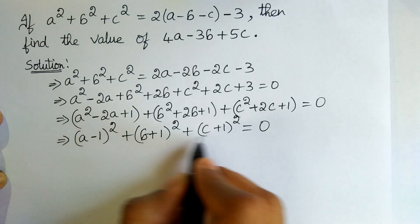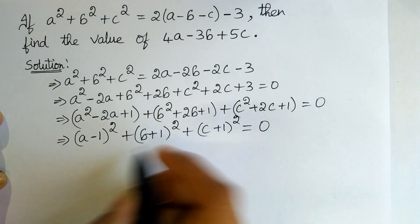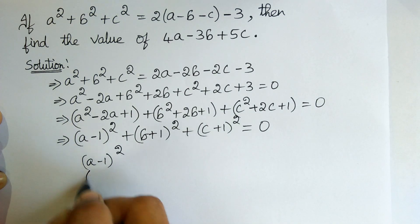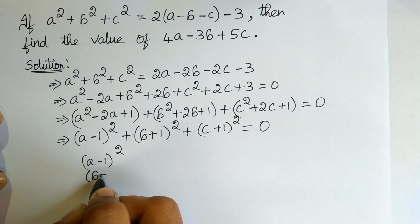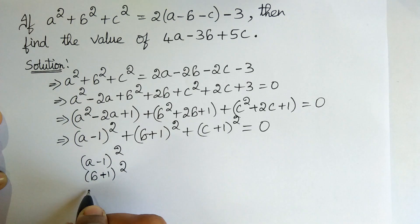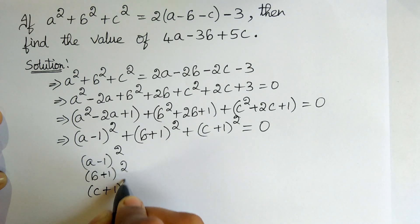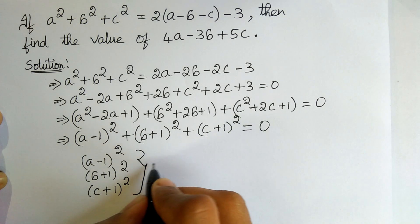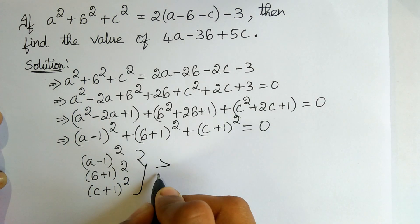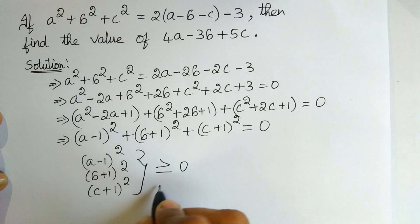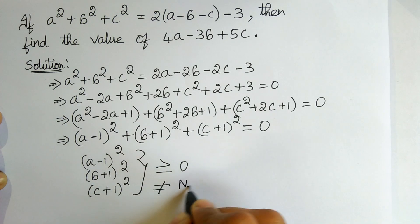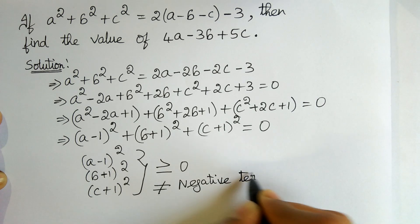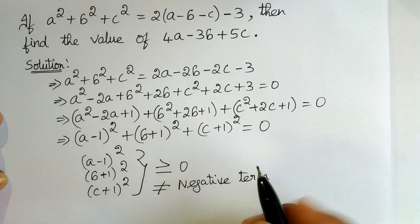We can see that all three terms are in square form. Therefore (a - 1)², (b + 1)², and (c + 1)² must all be greater than or equal to 0, and cannot be negative because they are in square form.